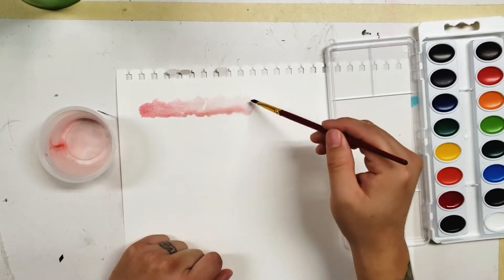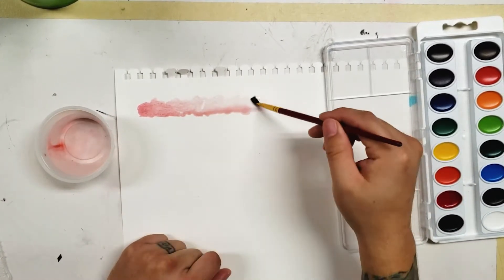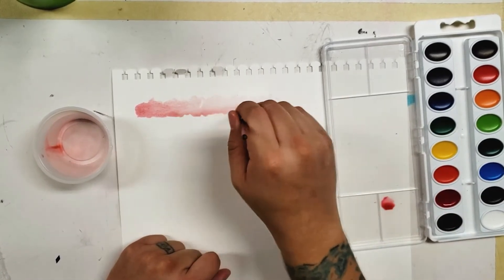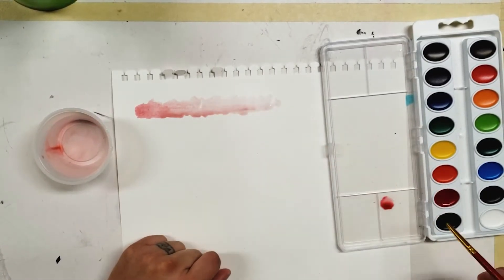In case you add too much water, you can move the water around, add some more pigment to it, or you can let it dry and then apply additional pigment over it.